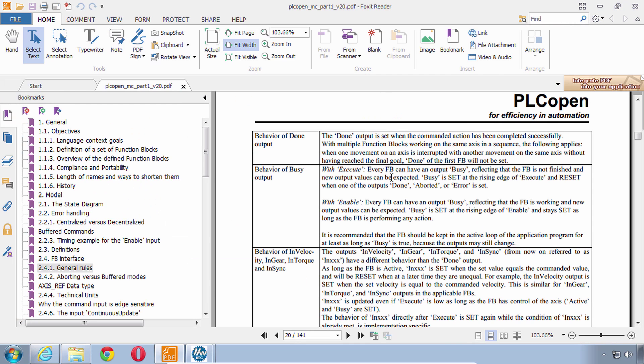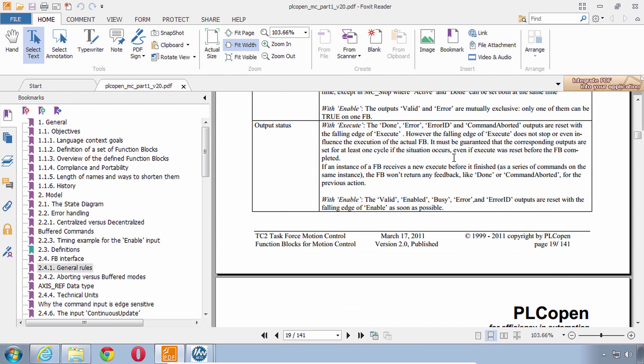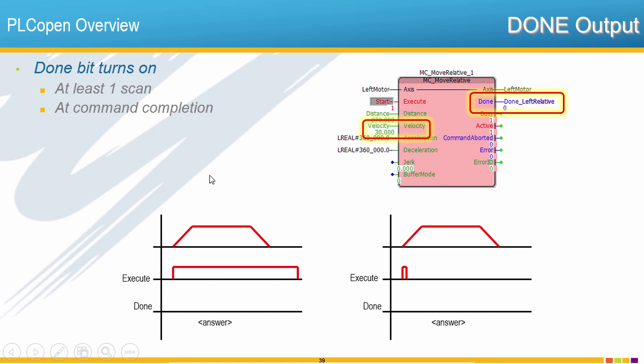If we look in this documentation for PLCopen, we can see this part here that it says it must be guaranteed that the outputs are set for at least one cycle if the situation occurs. The situation they're talking about is execute turning off. So if you have this situation where the move relative took place and the execute rising edge started that off and then execute is held on, what do we expect to see at the done output assuming that this move is successful? The answer is that as soon as that motion is done being commanded, the done output would turn on and then stay on until the execute input is reset. Then it would go off together with the execute input.